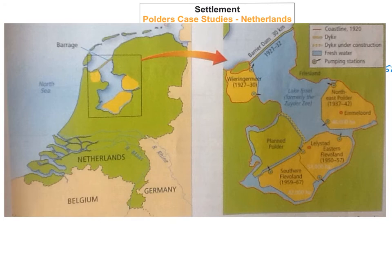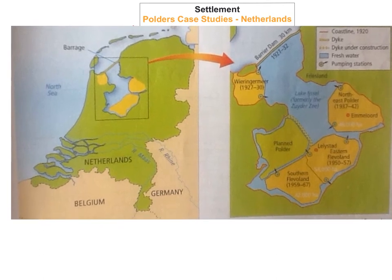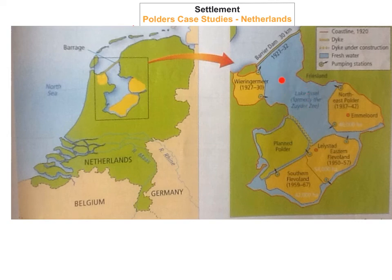It's worth noting how the Polders were actually formed. The first thing they did was build a barrier dam, which stretches for approximately 30 kilometres, built between 1927 and 1932. This trapped all the sea water, and then they started pumping out the salt water using oil-powered pumps. Then they began planting the Polders by building dikes — large walls — to keep the water from flowing back in.